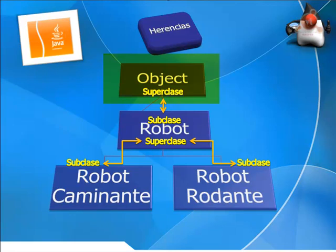¿Cómo se entiende entonces que en Java cada clase solo puede tener una superclase si Object es siempre superclase? Si no definimos una superclase, directamente su superclase es Object. Si definimos que una clase tiene otras superclases, recibirá los métodos de Object también a través de esas superclases. Si creamos una definición de clase que no indica ninguna superclase, Java asume que la nueva clase hereda directamente de Object. El DeltaRobot del tutorial anterior, que no especificaba superclase, sería por tanto subclase de Object.